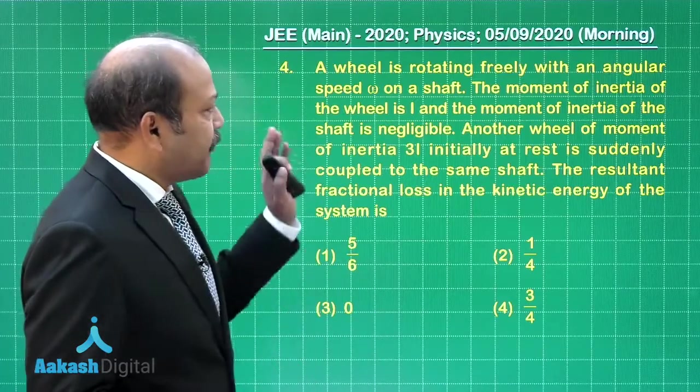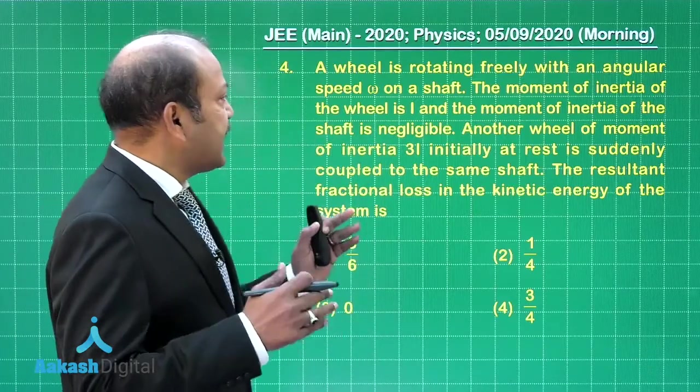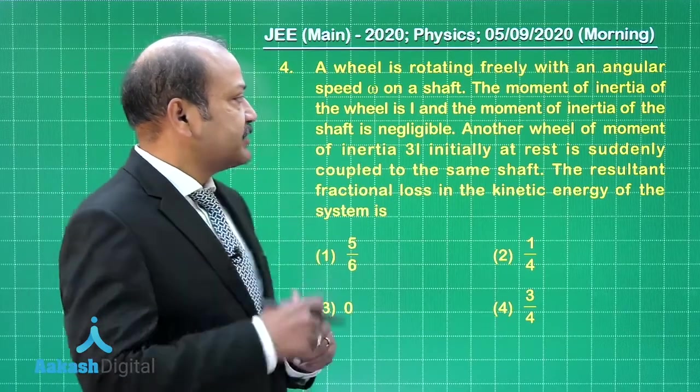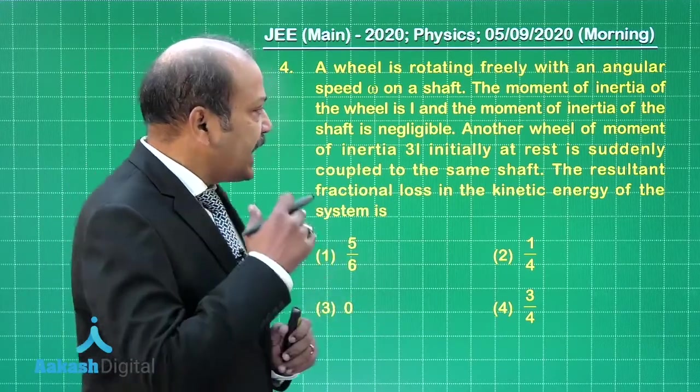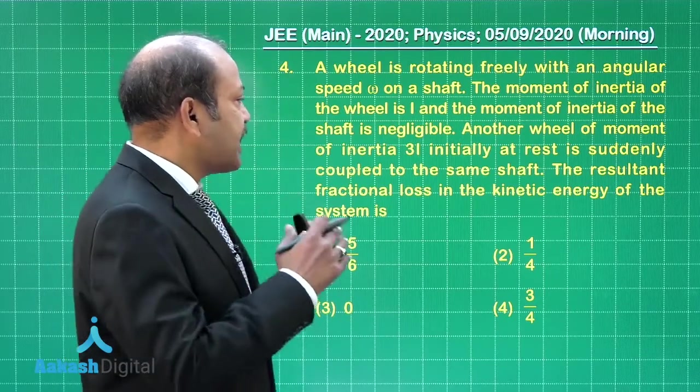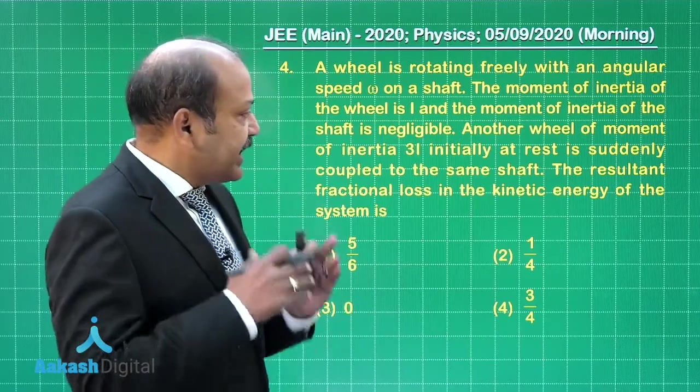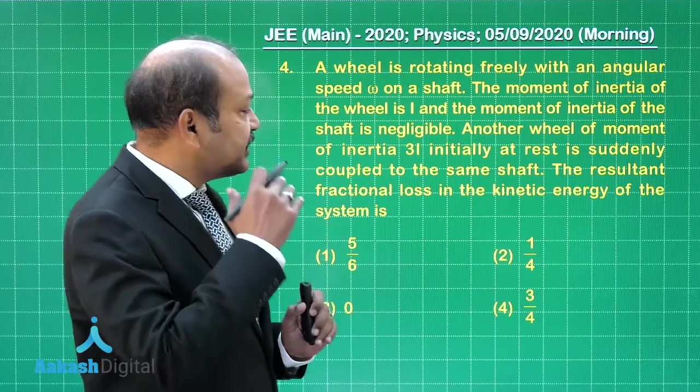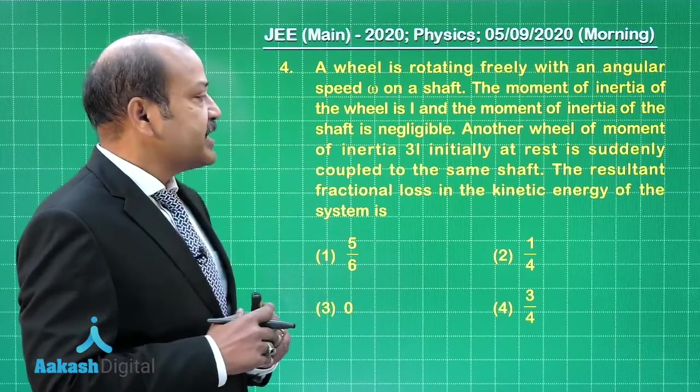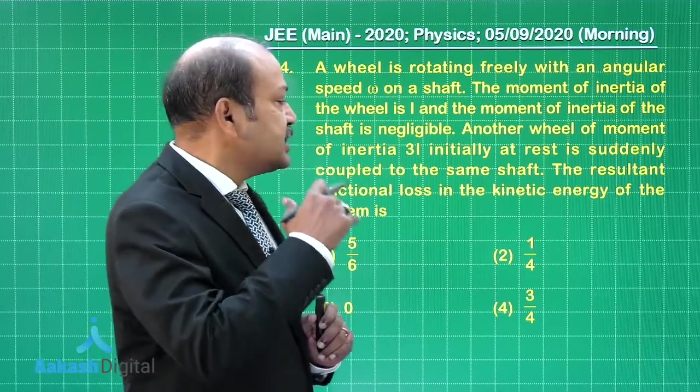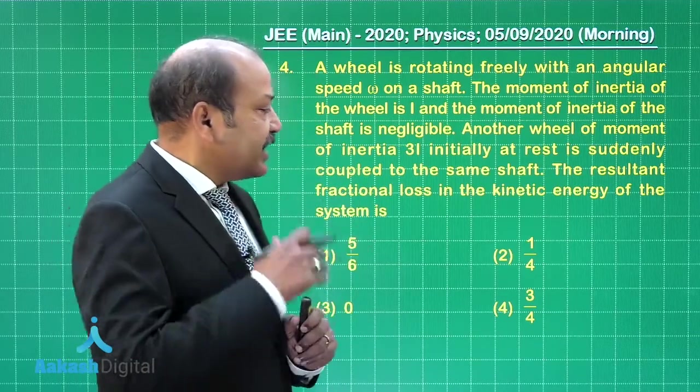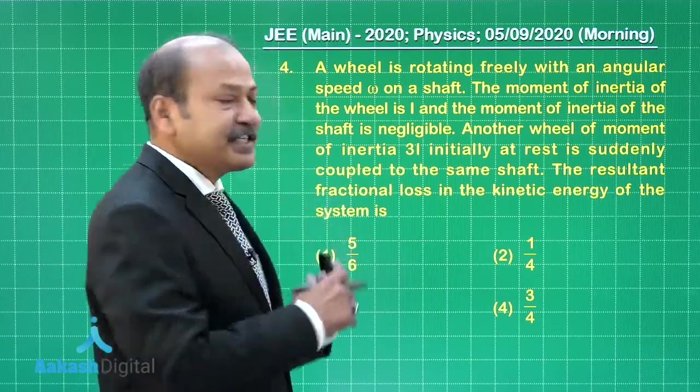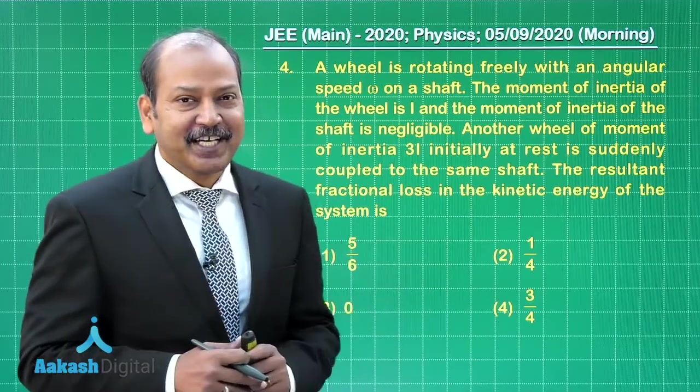Question 4 says a wheel is rotating freely with an angular speed omega on a shaft. The moment of inertia of the wheel is I and the moment of inertia of the shaft is negligible. Another wheel of moment of inertia 3I initially at rest is suddenly coupled to the same shaft. The resulting fractional loss in the kinetic energy of the system is, and the four options are given.